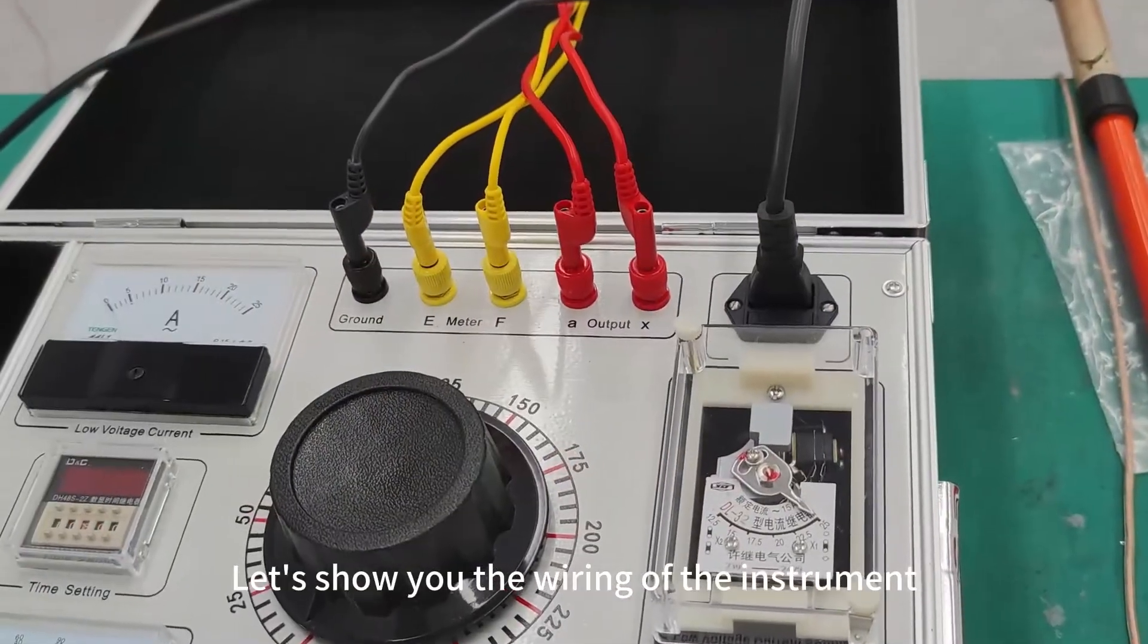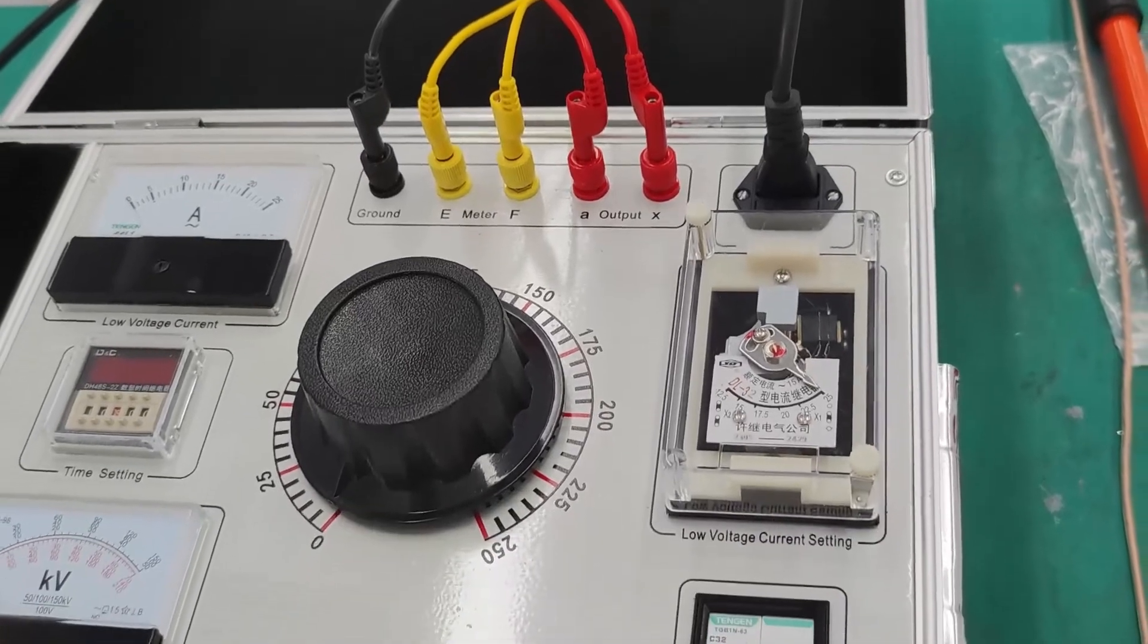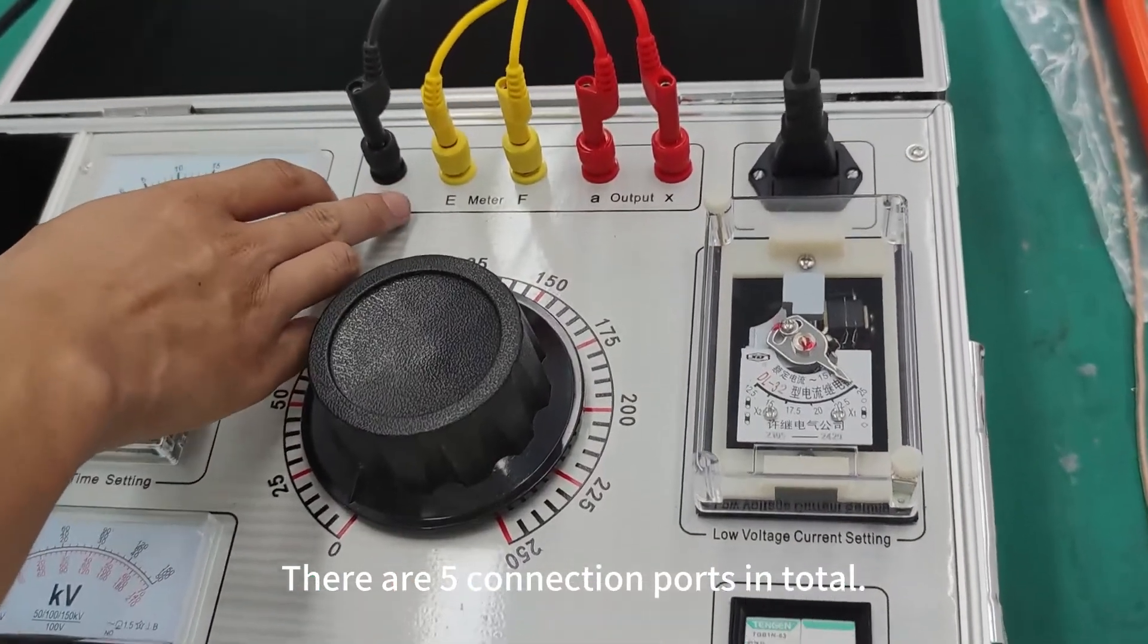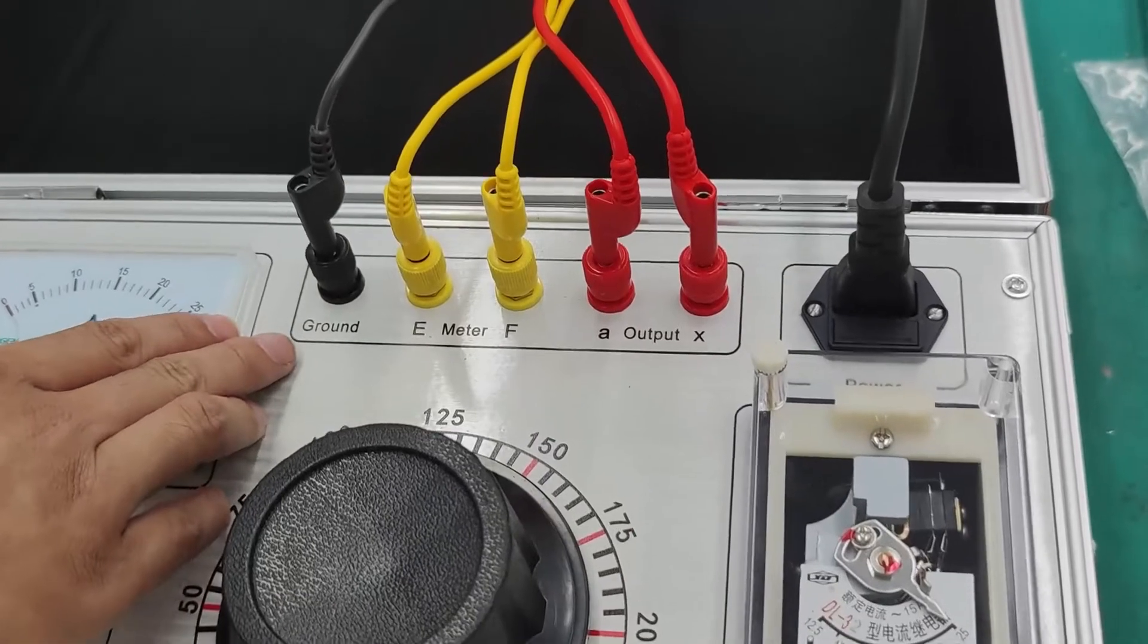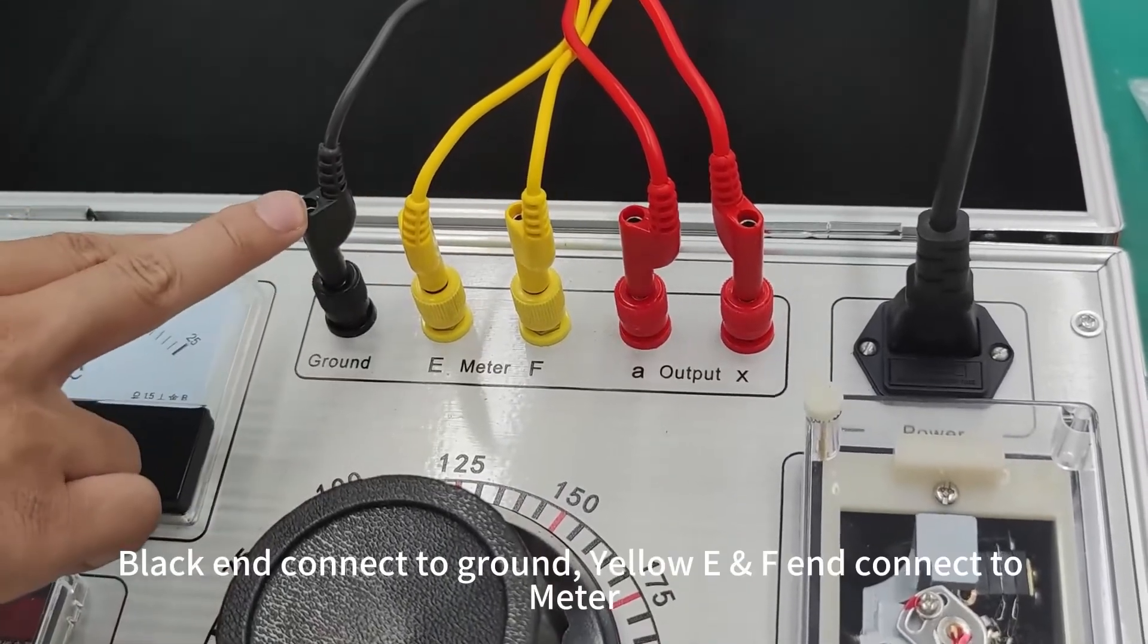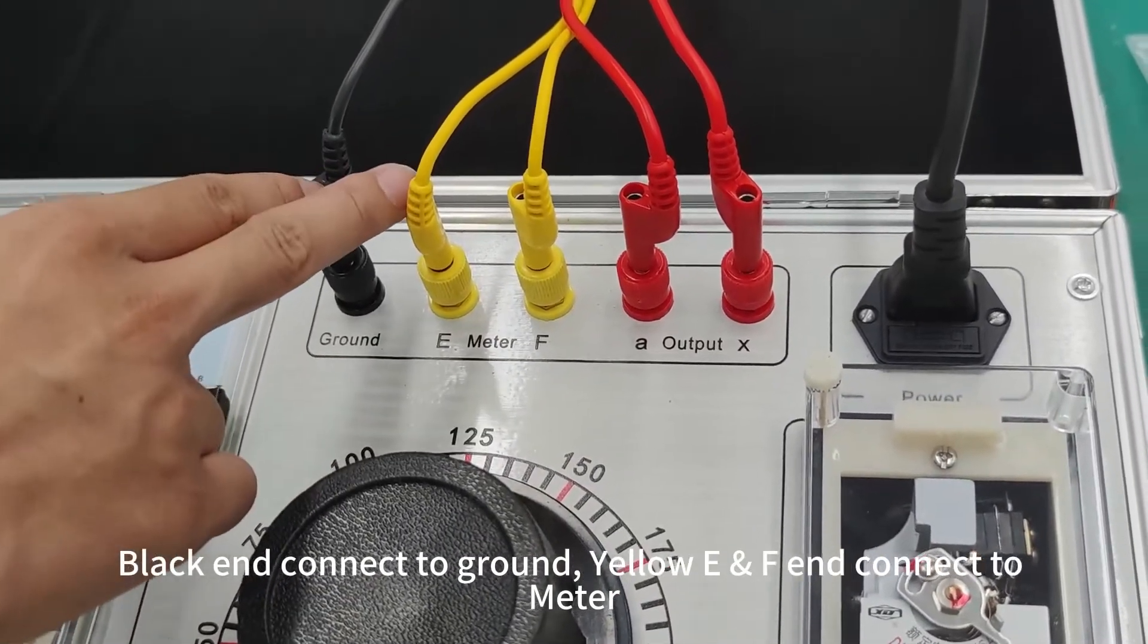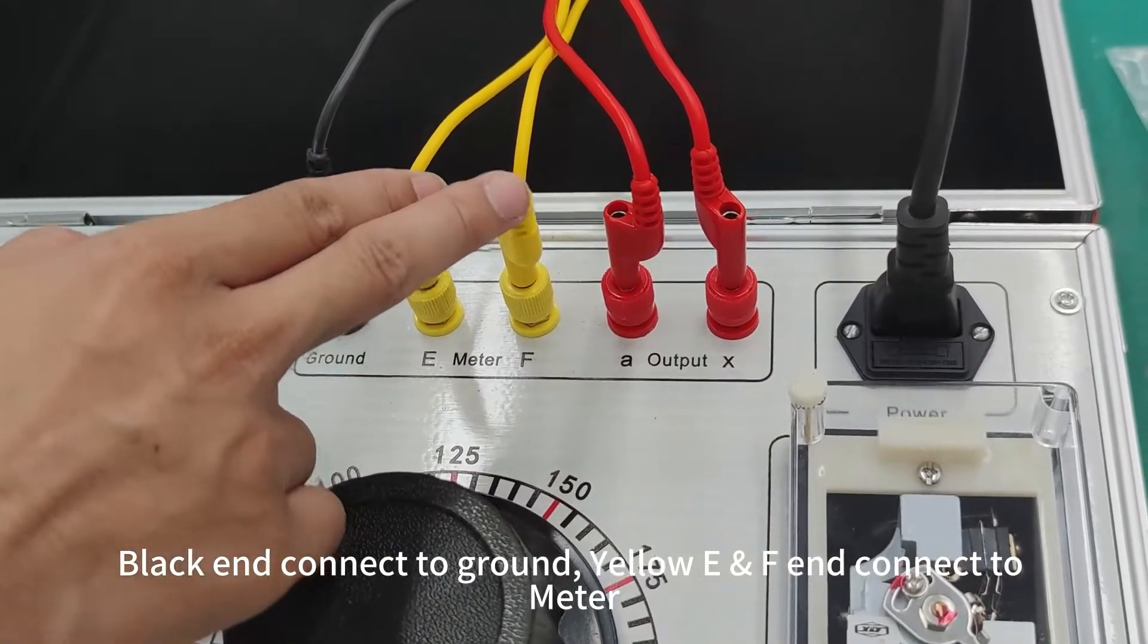Let's show you the wiring of the instrument. There are five connection ports in total. Black end connects to ground. Yellow E and F end connect to meter.